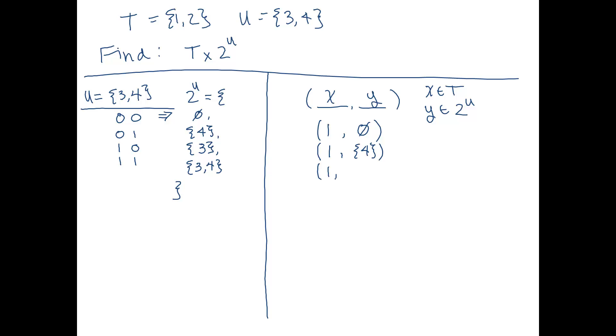And then following this pattern, we're going to have 3. And then we're going to have 3, 4. Okay. All right. Now we have made all of the pairs that we can make with the first element from T with 1 being in this x spot.